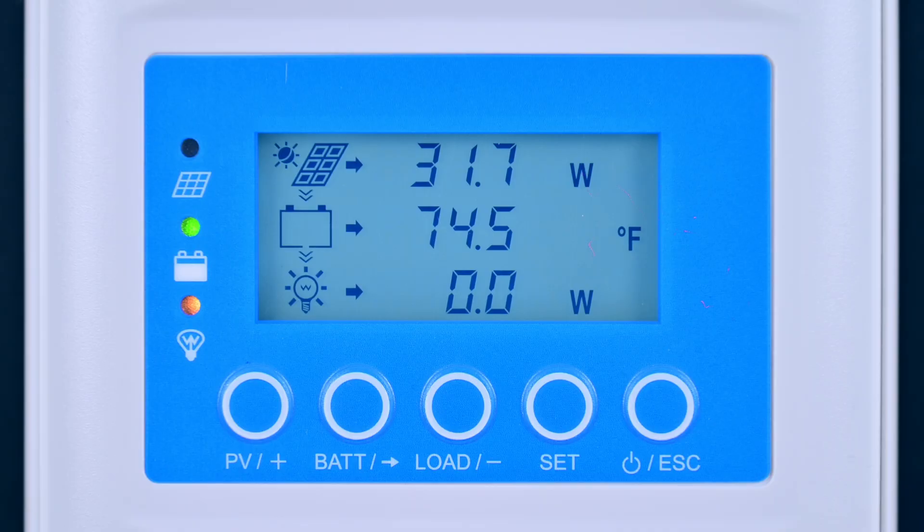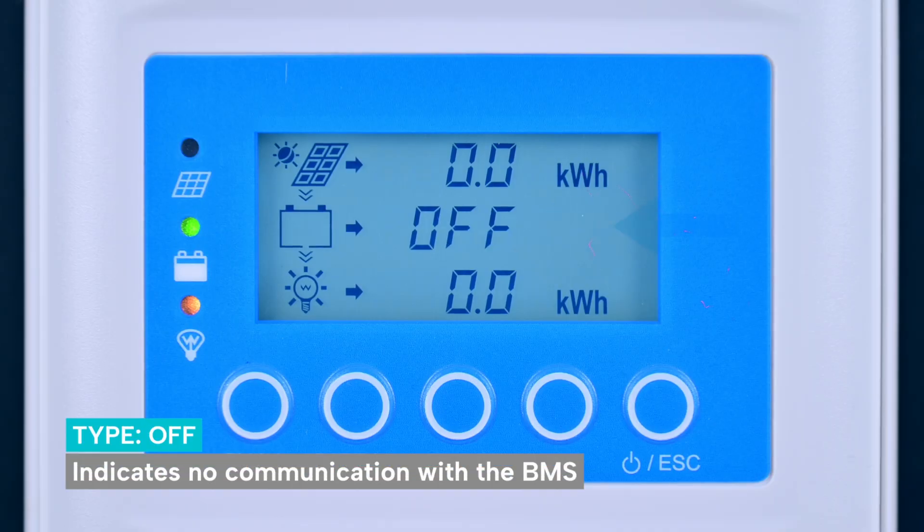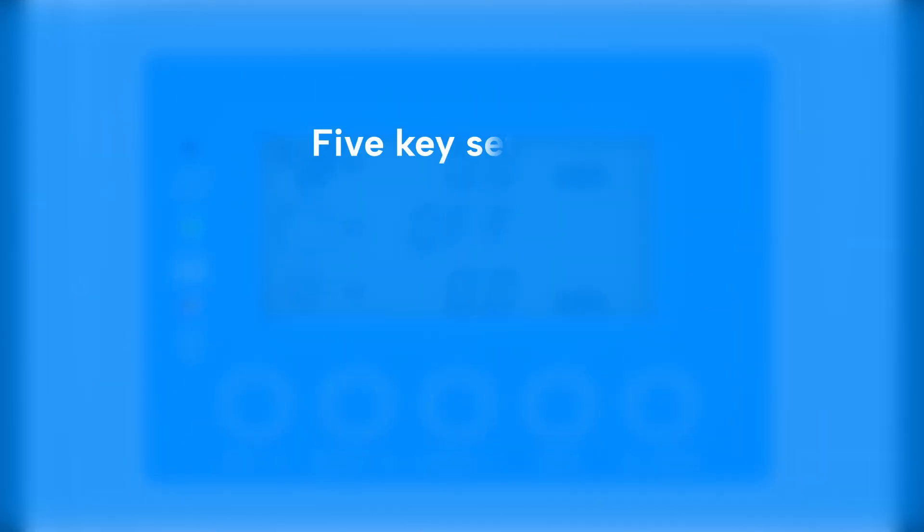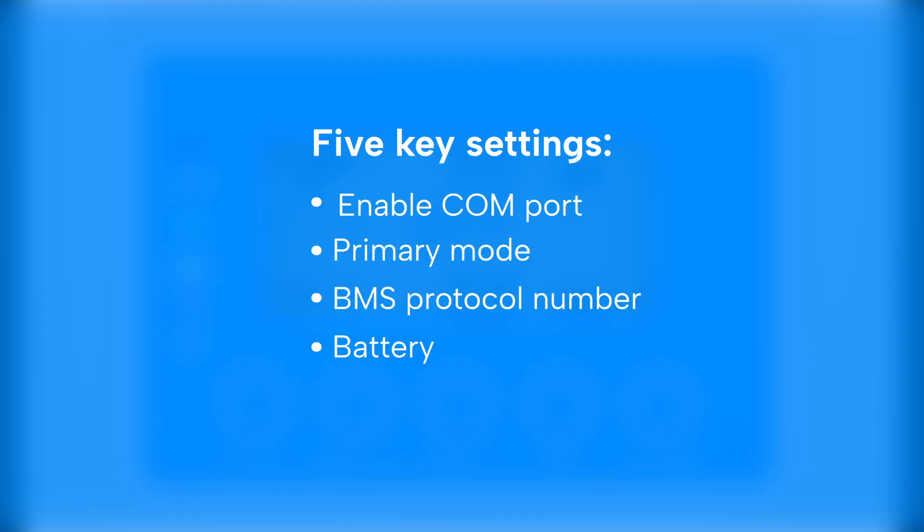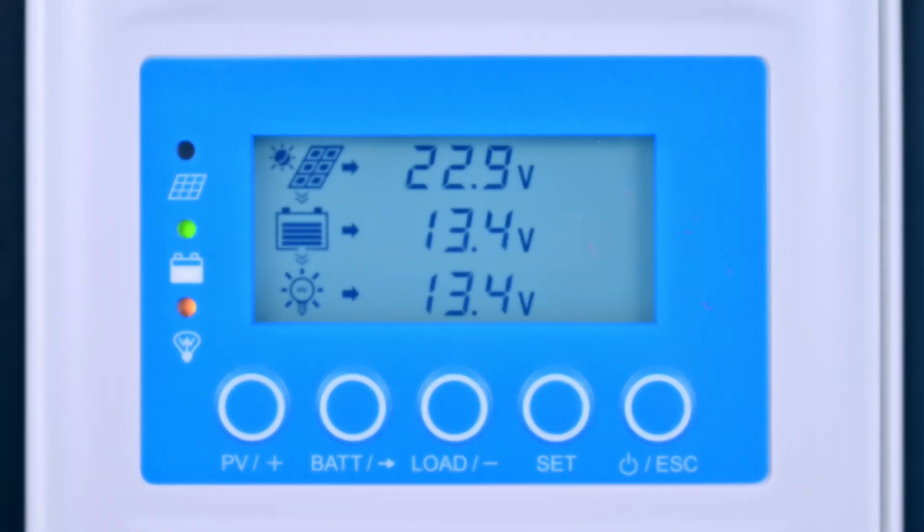Although everything is connected, the device screen shows that communication has not started yet. So, we need to configure five key settings: Enable COM port, primary mode, BMS protocol number, battery type, and battery capacity.